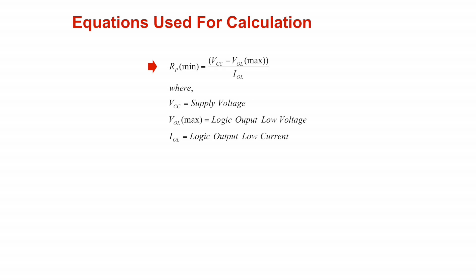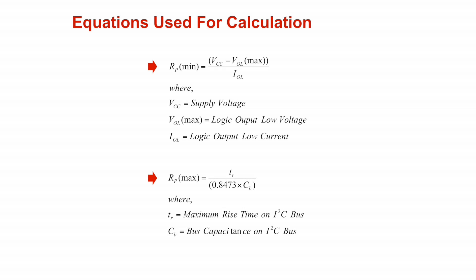The logic output low voltage, represented by VOL, determines the RP min. The RP min depends on VCC, VOL, and IOL, where VCC is the reference voltage, VOL is the logic output low voltage, and IOL is the logic output low current. The calculation for the maximum value of pull-up resistor requires knowledge of parameters about the I2C bus, such as the bus capacitance represented as CB.